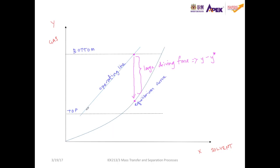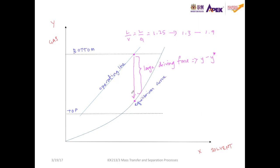To ensure the operating line is closer to the equilibrium curve, the height of the column needs to be taller. The operating line derived from mass balance gives the minimum that the column requires. So with a given L over V value, or L over G ratio, we need to increase this by 10% to 50% higher than the minimum so the column operates as efficiently as possible. For example, if the minimum is 1.25, then in the actual column we increase this to 1.3 to 1.9. We can use this relationship between the operating line and the equilibrium curve to determine the height of the column.